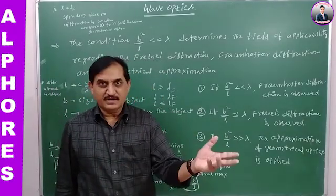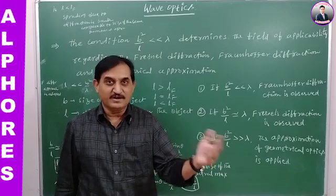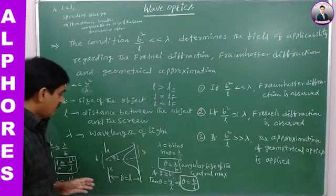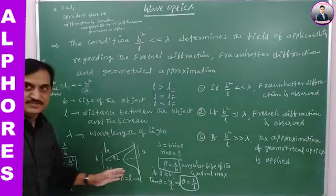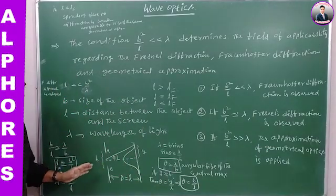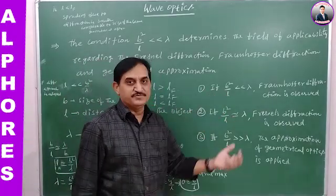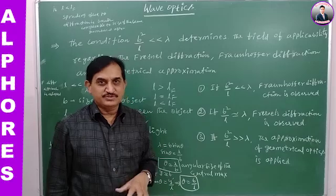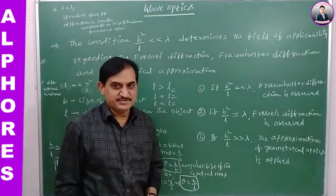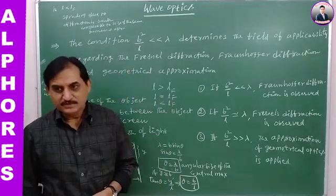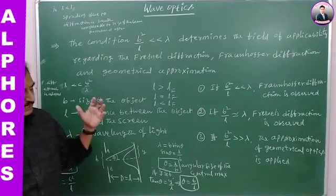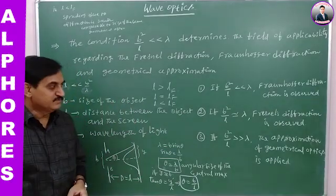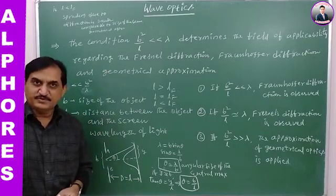That is another discussion already made at the beginning of optics. So either you make the discussion by the distance of the screen, or by comparing the size of the object with the wavelength of light used — both give the same results. This is regarding the three types of conditions: Fraunhofer diffraction, Fresnel diffraction, and geometrical optics.